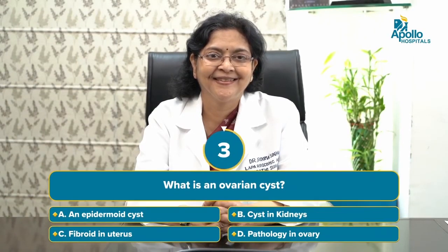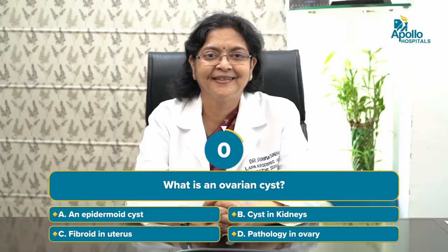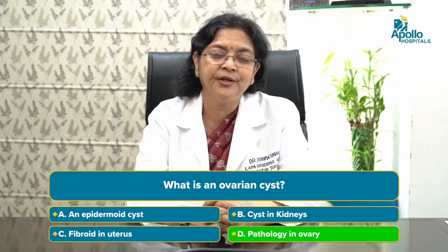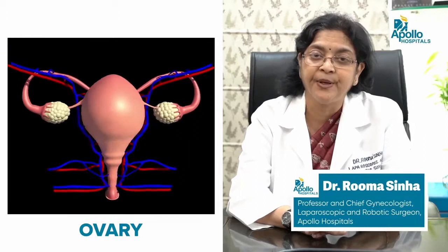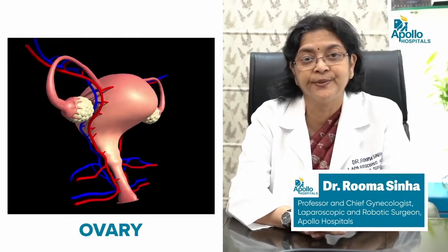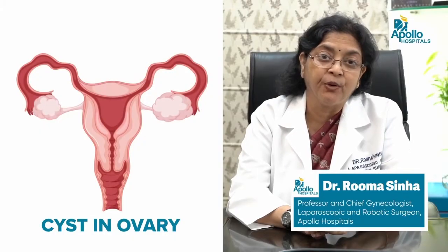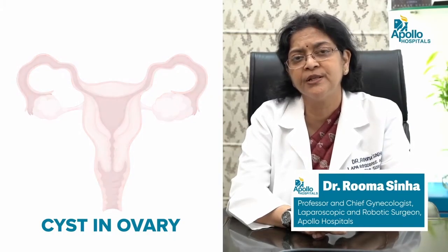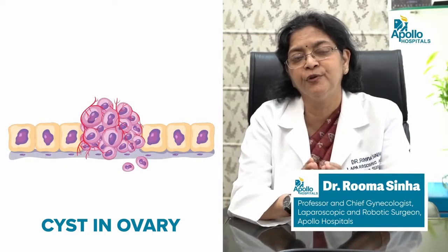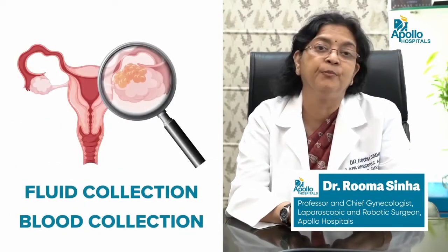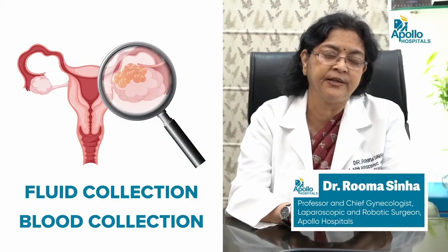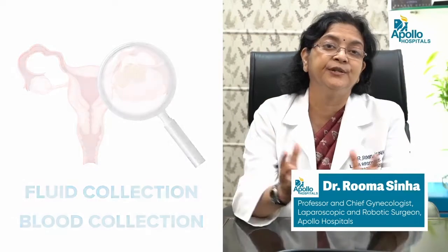Today we will talk about a few aspects of ovarian cysts in women. Ovarian cysts are pathology that we find in our ovaries — two organs next to the uterus inside the tummy. The function of the ovary is to produce eggs. A cyst in the ovary is a kind of bubble that develops, causing the ovary to enlarge from its normal 3–4 centimeters to 5 or even 10 centimeters due to fluid, blood, or other collected material.